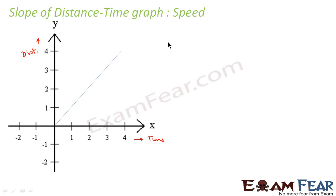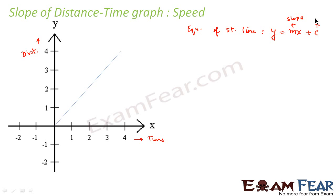When we talk of a distance-time graph we need to say path-length time graph, so do not get confused with the terminologies. We know that the equation of any straight line is y = mx + c, where m is the slope and c is the intercept. Here the value of c is equal to 0 because there is no intercept — it starts from the origin — so y turns out to be m times x.